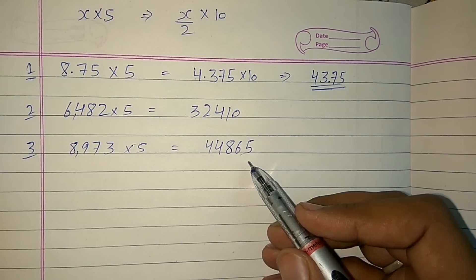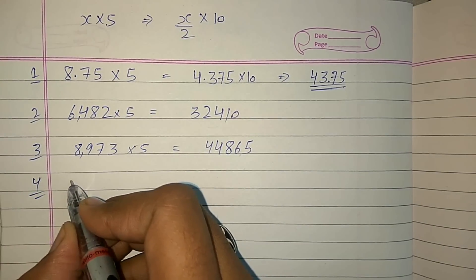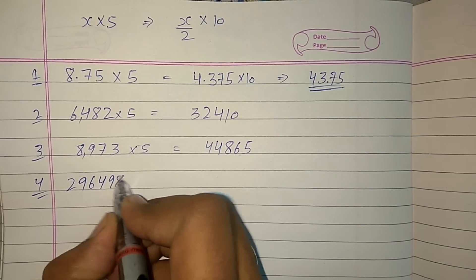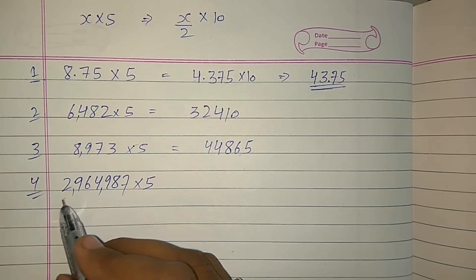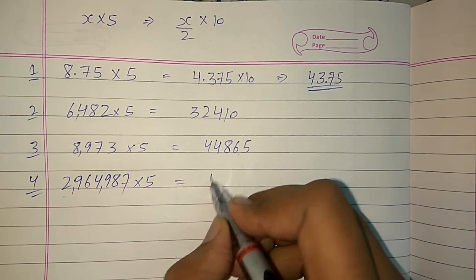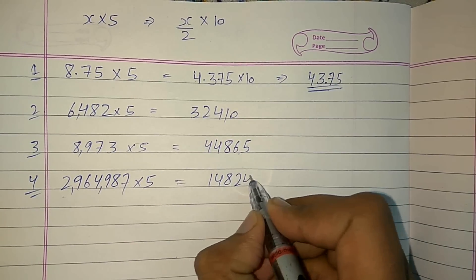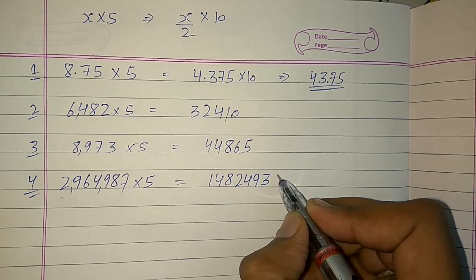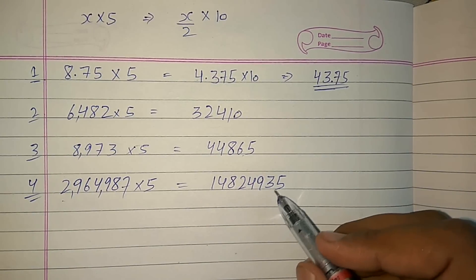Let's see our last example. We will take a huge number this time: 2964987 to be multiplied by 5. See how huge the number is. Divide this by 2, it will be 1482493.5. I have not written the decimal as you know when you multiply it by 10, the point will shift.